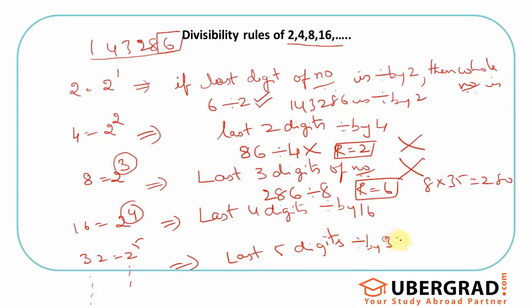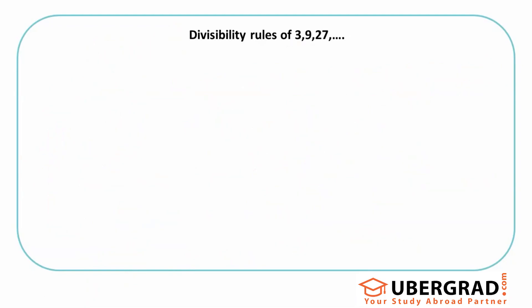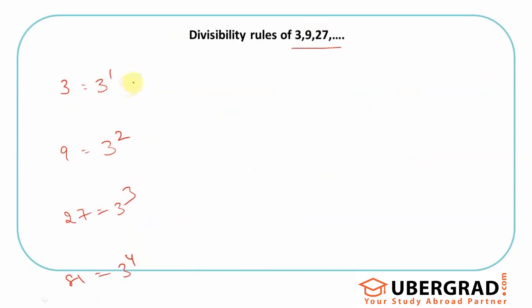For 32 (2^5), check the last 5 digits and see if divisible by 32. There's a clear pattern: it's 2^1, 2^2, 2^3, 2^4, 2^5. The next set of rules covers numbers like 3, 9, 27 — again a pattern: 3 is 3^1, 9 is 3^2, 27 is 3^3, 81 is 3^4. So what is the divisibility rule of 3? Sum of digits of the number.